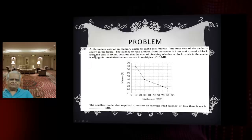Problem question 15: A file system uses an in-memory cache. The miss rate of the cache is shown in the figure here. The latency to read a block from the cache is 1 millisecond, and to read a block from the disk is 10 milliseconds.